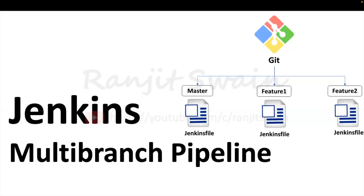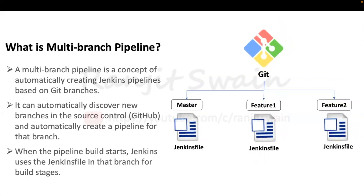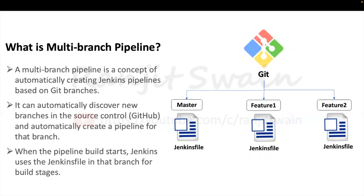Before we proceed and set up the multi-branch pipeline in Jenkins, let's have a look at the multi-branch pipeline in detail. The multi-branch pipeline is a concept of automatically creating Jenkins pipelines based on key branches. It can automatically discover new branches in the source control — that is GitHub — and automatically create a pipeline for that branch. When the pipeline build starts, Jenkins uses the Jenkinsfile in that branch for build stages.